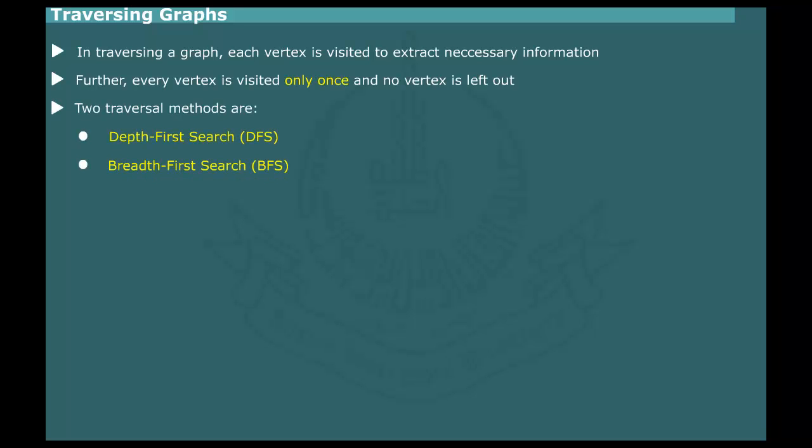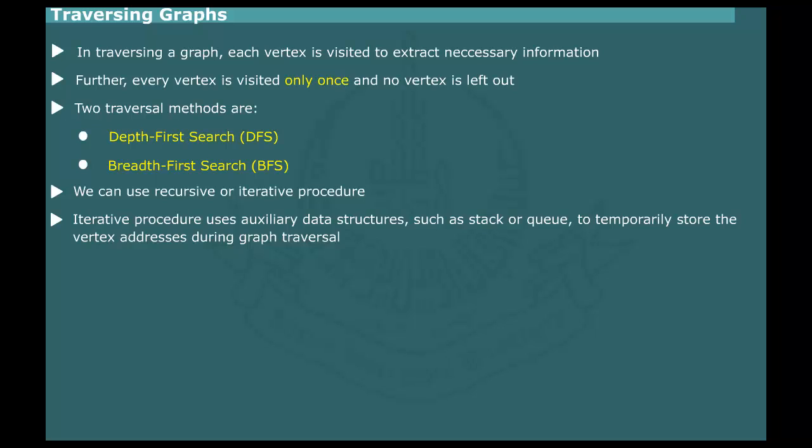There are two standard methods for traversing a graph. These are referred to as Depth-first search and breadth-first search. As with trees, we can use recursive or iterative procedure for traversing a graph. The iterative procedure uses auxiliary data structure such as stack and queue to store vertex data as the graph is traversed.